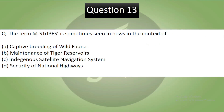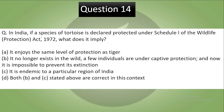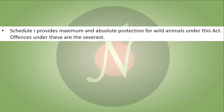We have more questions. Question 14: In India, if a species of tortoise is declared protected under Schedule 1 of the Wildlife Protection Act of 1972, what does it imply? A: It enjoys the same level of protection as the tiger. B: It no longer exists in the wild and a few individuals are under captive protection and it is impossible to prevent its extinction. C: It is endemic to a particular region of India. Now let's see the answer. Your answer is A — it enjoys the same level of protection as the tiger does. Schedule 1 provides maximum and absolute protection to wild animals and offenses under this are the most serious.